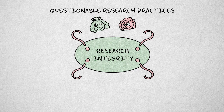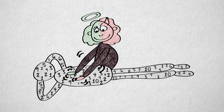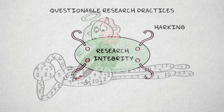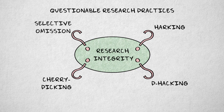These practices generally refer to selective manipulation, or massaging of data, and selective reporting of results. Different types of QRPs can be distinguished. I'll discuss HARKing, p-hacking, cherry-picking, and selective omission here.